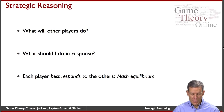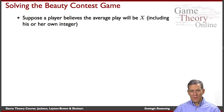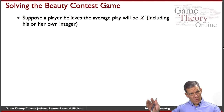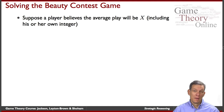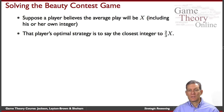How are we going to reason about this? Suppose I think that the average integer named in this game is going to be some number X — including my own integer, I think this is going to be the average. Well, my reply should be two-thirds of X. I should be naming the integer closest to two-thirds of whatever I believe the average is going to be.